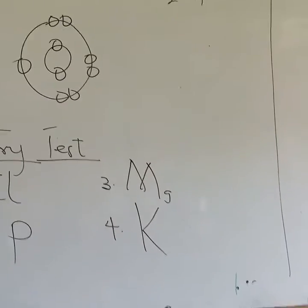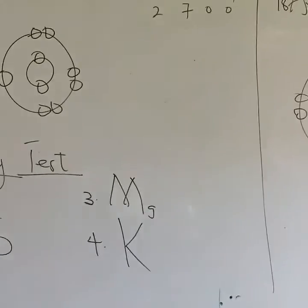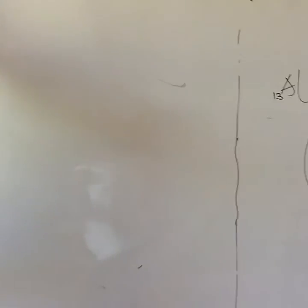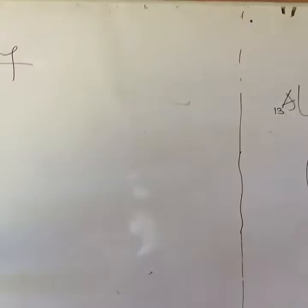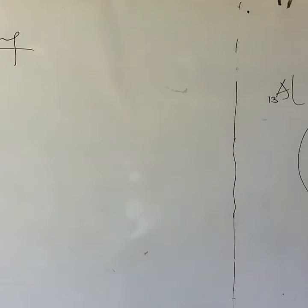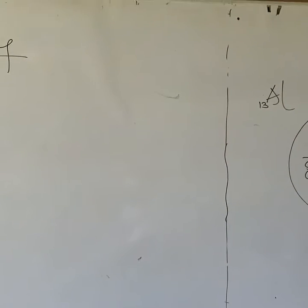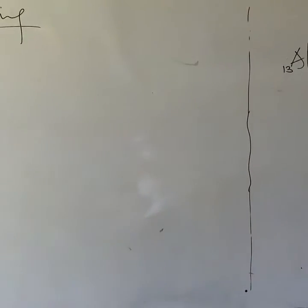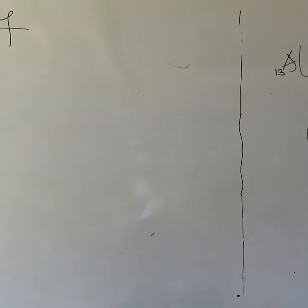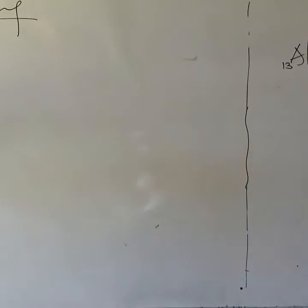Now having known the electronic configuration of these elements, let's move on. We are moving on to what we call bonding. We already know how ions are formed, we know the electronic configuration of elements, we know what elements are, we know matter, atoms, and molecules. Now let's move on to bonding.